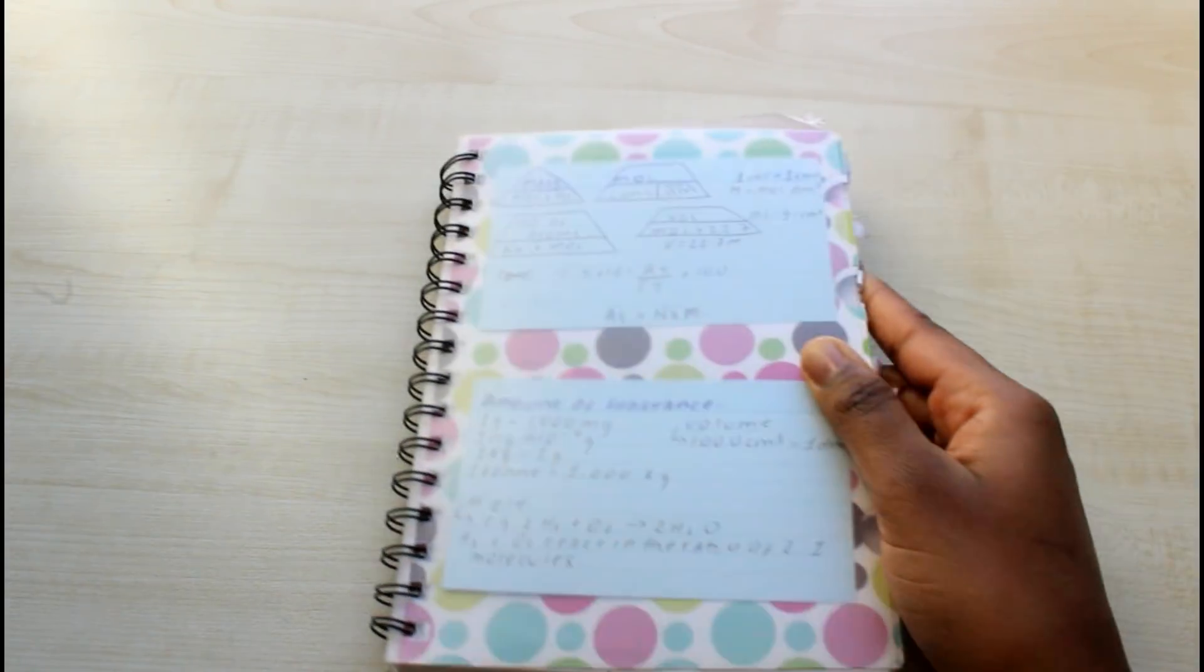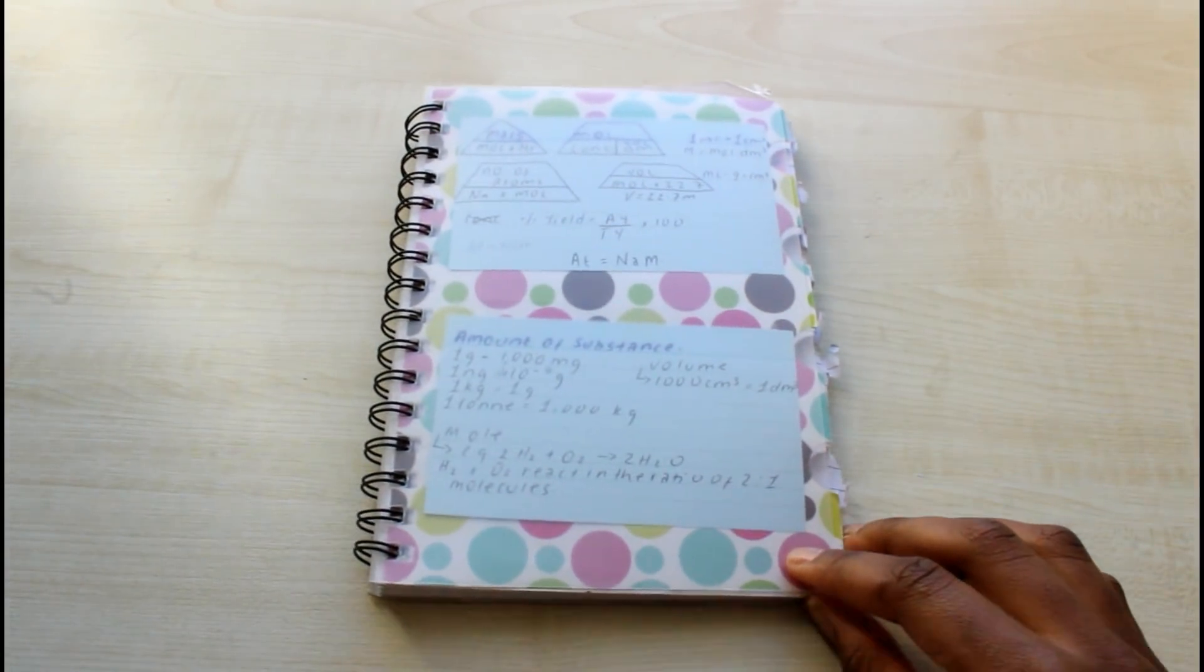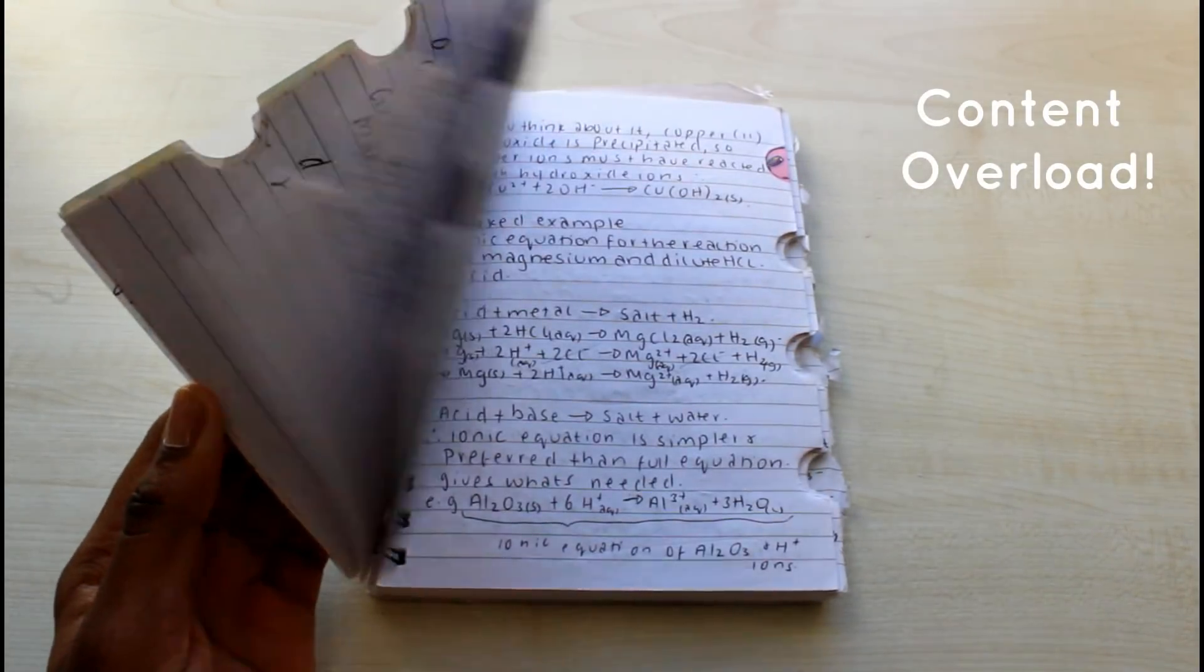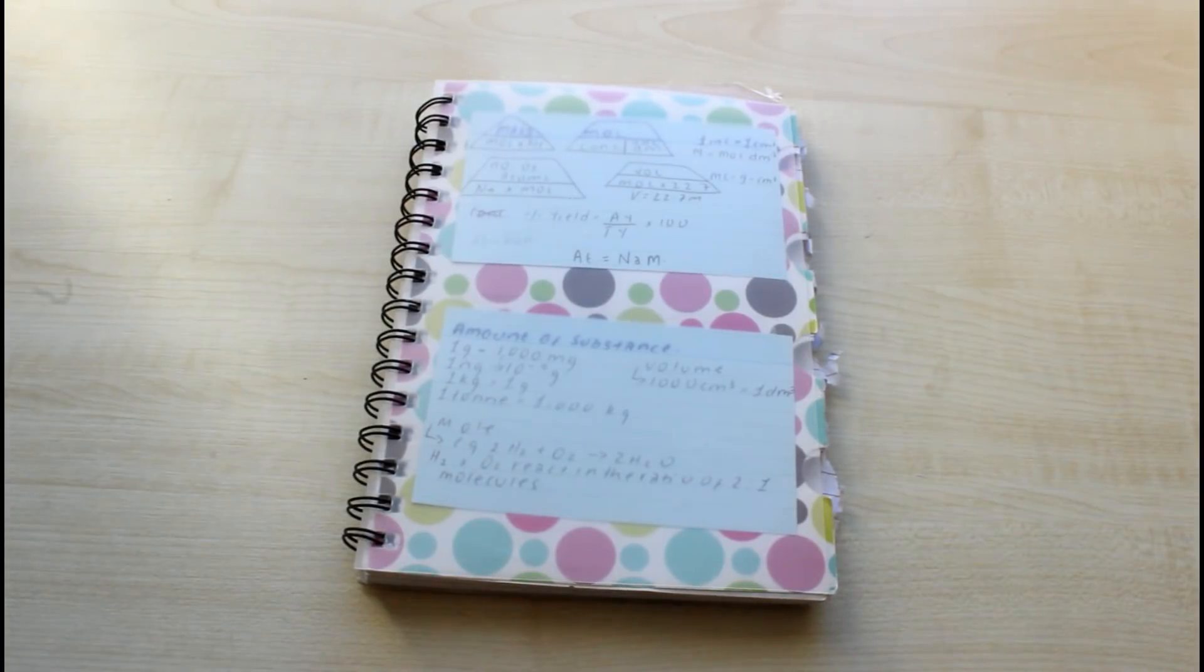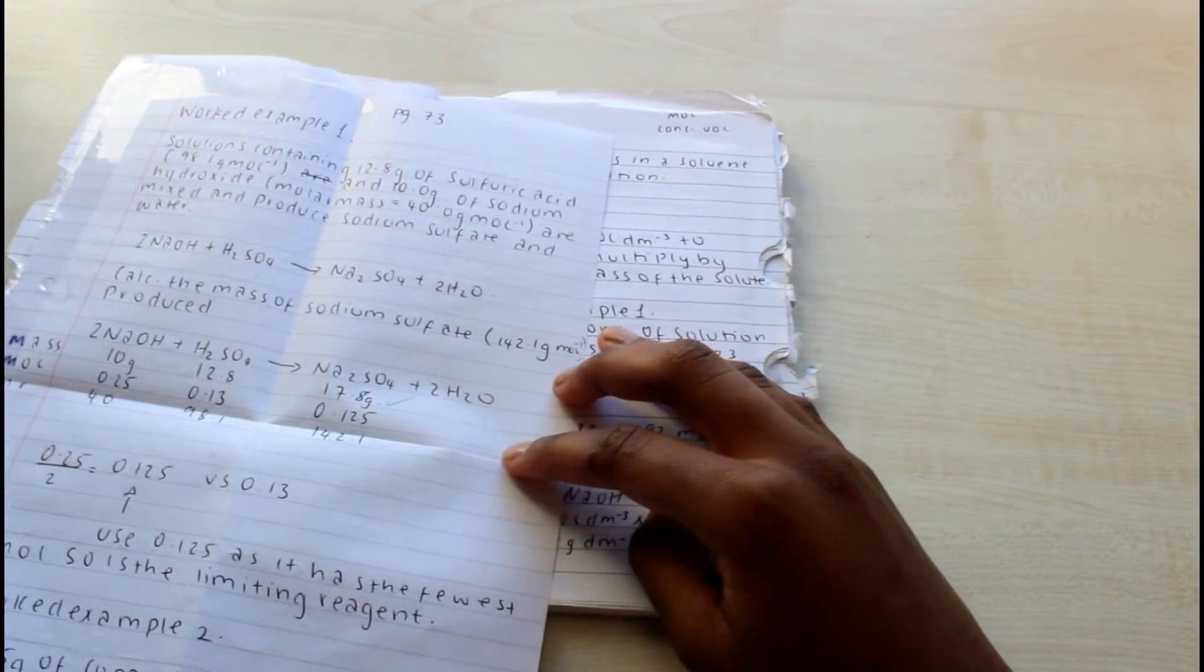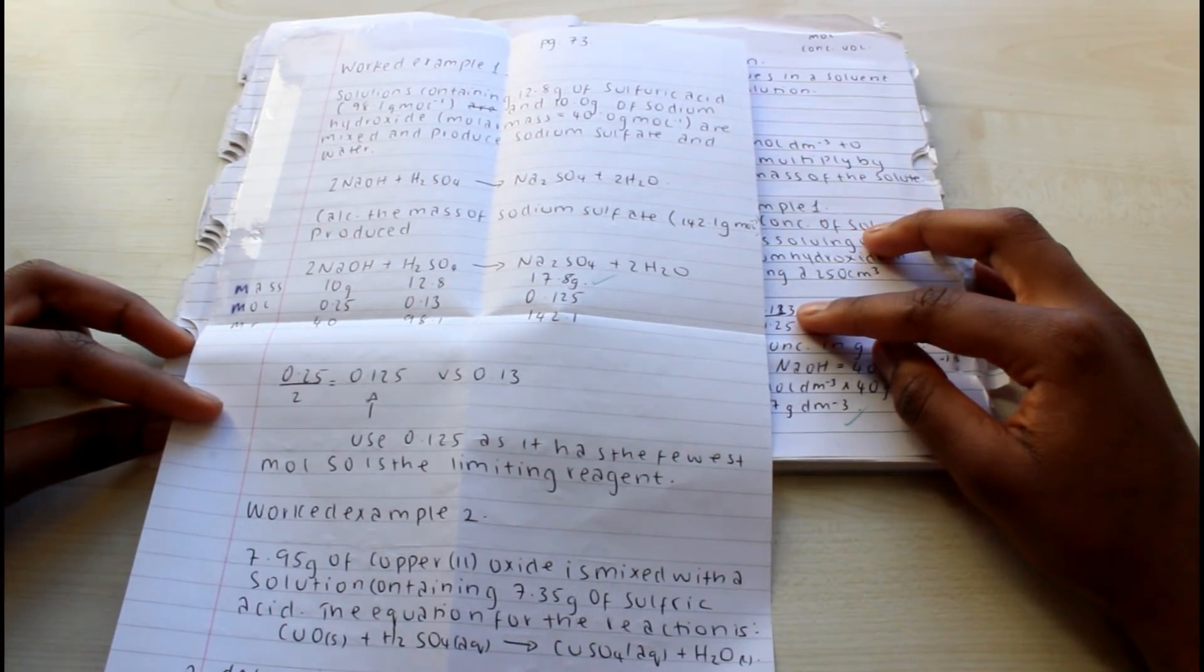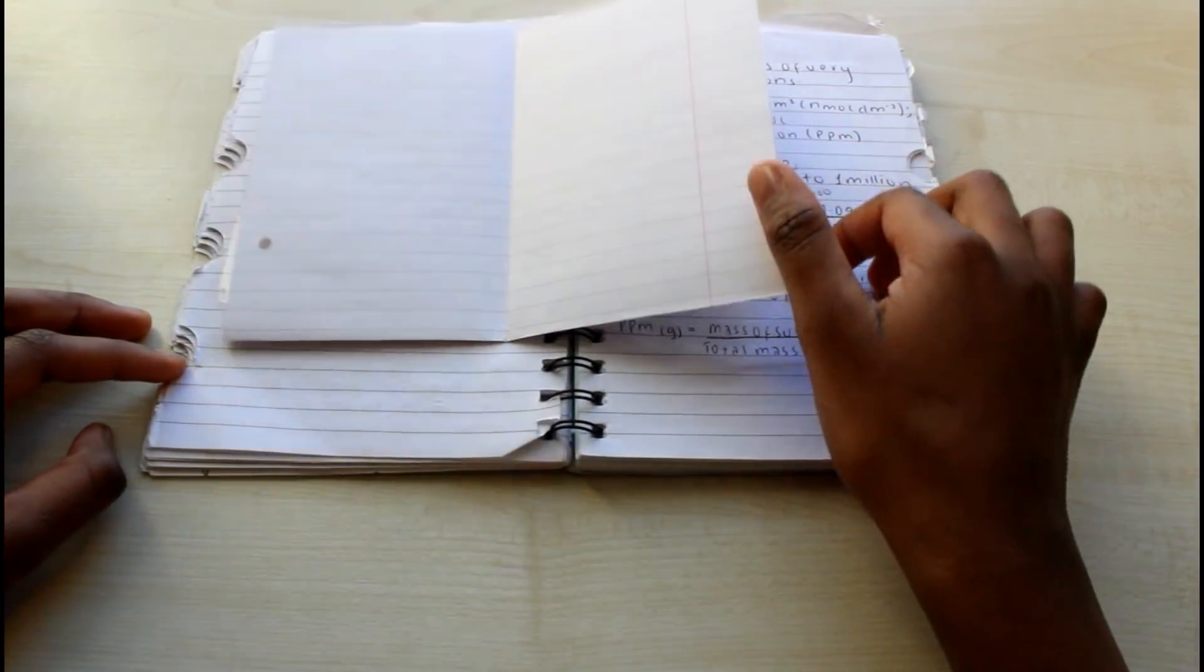I also used this small A5 notebook to make notes. I actually used this for AS chemistry and biology and it worked pretty well. Despite the fact that it's still full of information, I used it mainly for things that would not fit onto flashcards, and it was just a really good way to make notes that I could revise when on the go.